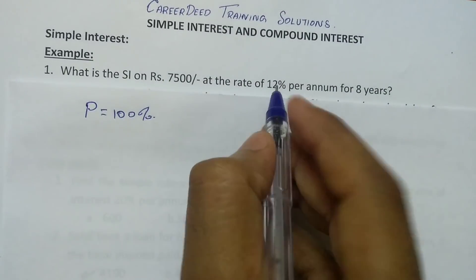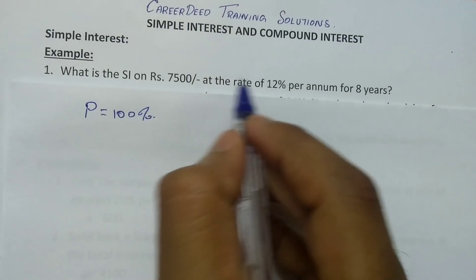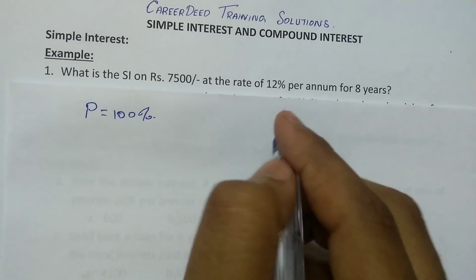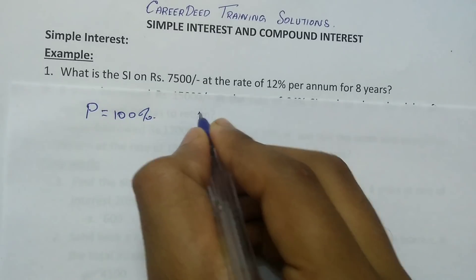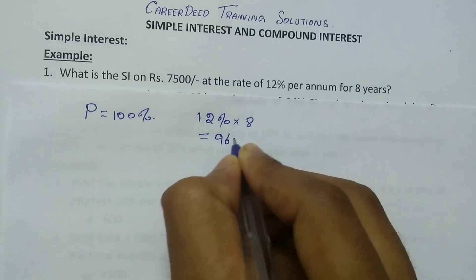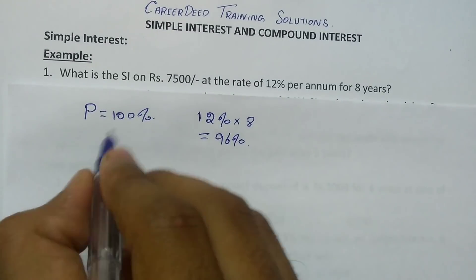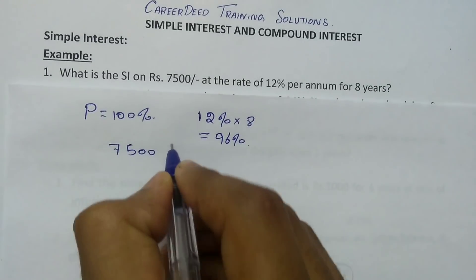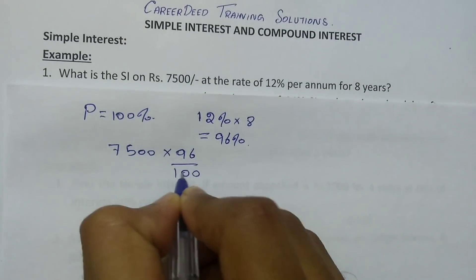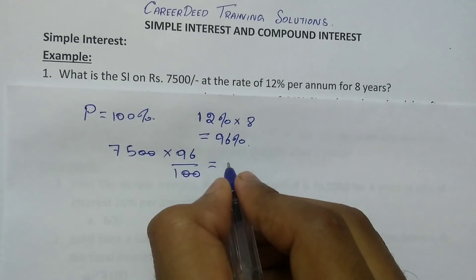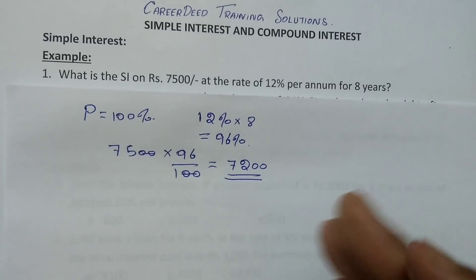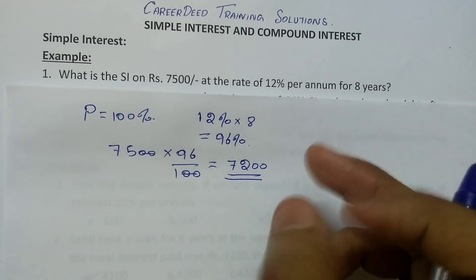The bank is asking you to pay 12% every year as simple interest, and you are paying this 12% for 8 years. So 12% into 8 gives you 96%. You know 7500 is 100%, so you have to find only 96% of 7500. So 75 into 96 gives you 7200. So Rs.7200 is the total simple interest to settle at the end of 8 years.